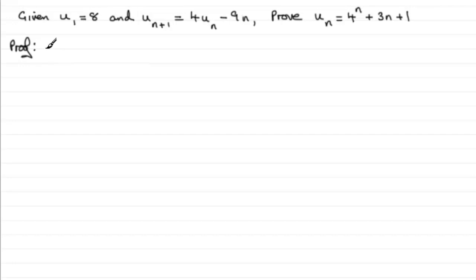Using mathematical induction, we need to show it's true for n=1, then assume it's true for n equals some positive integer k, and on that assumption prove it's true for n = k+1. If that holds, then since it's true for n=1, it must be true for n=2, then n=3, and so on — in other words, for all positive integers n.